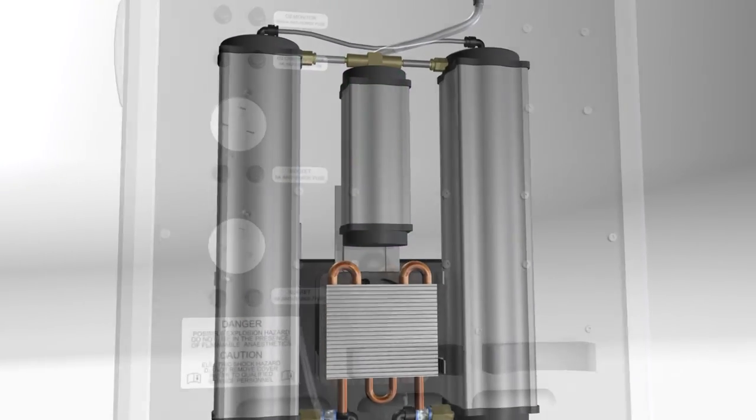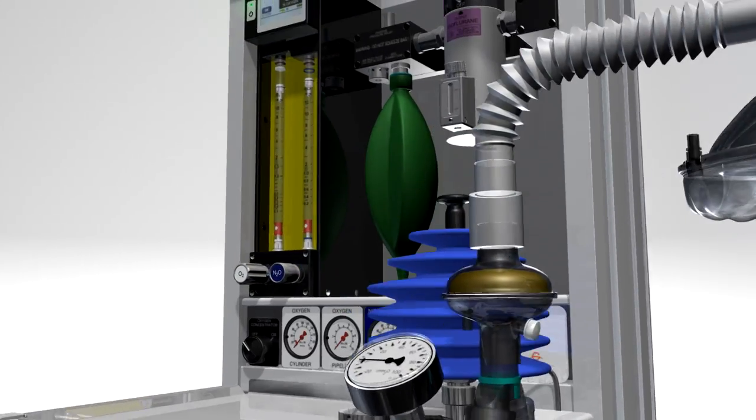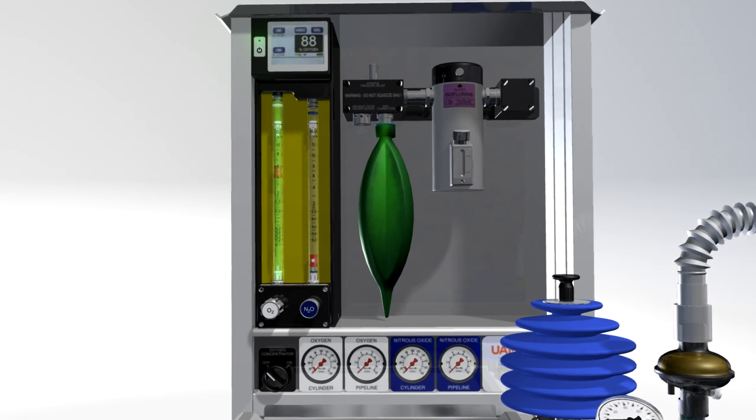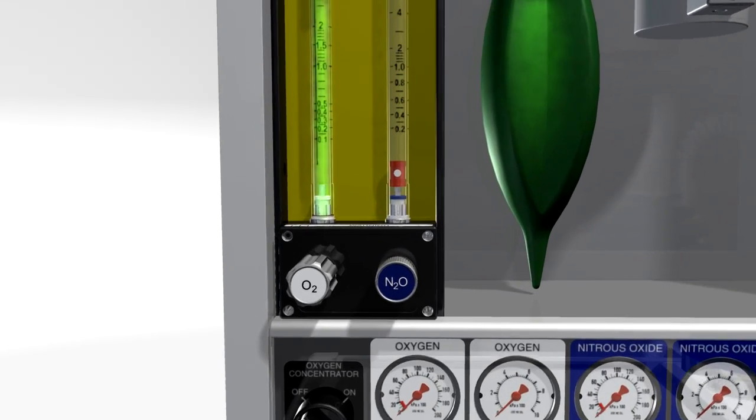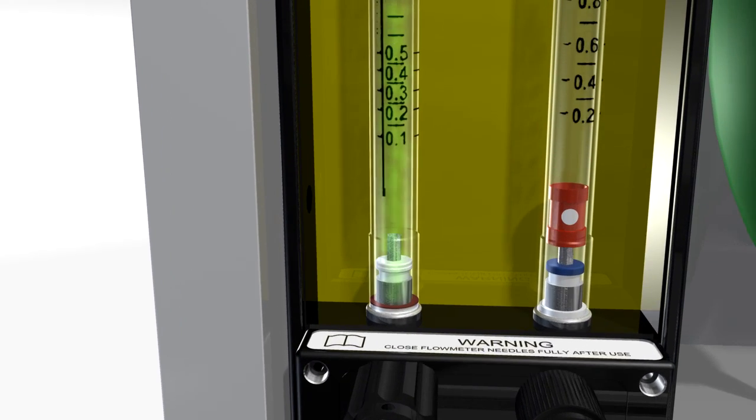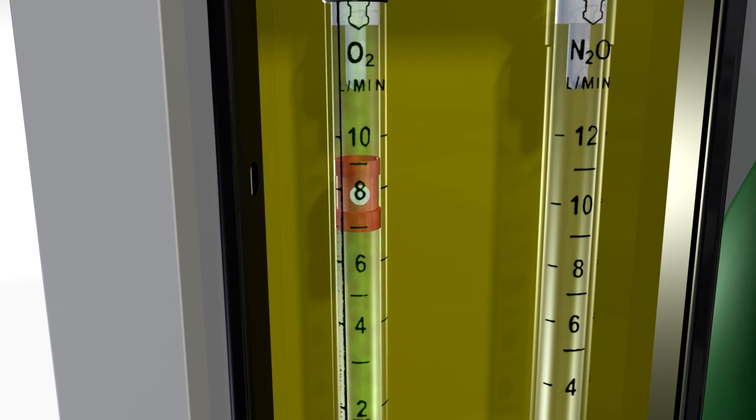The UAM produces up to 10 liters per minute of oxygen. The oxygen then travels through the flow meter into the back bar and reservoir bank. The flow meter controls the amount of oxygen entering the back bar and available for the patient. The spinning bobbin shows the flow rate in liters per minute.